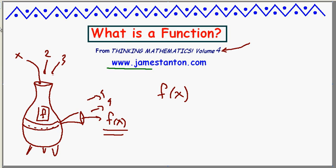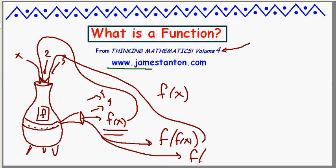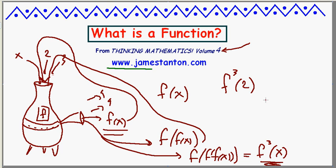The nice thing about the machine picture is that one can think of all sorts of things to do. What if I took this output and put it back into the machine? Then out would come f applied to f(x). Or I could do that again and get f applied to f applied to f(x). This notation is a little awkward writing f, f, f of x, so people tend to write a little 3 on it — f³(x) — meaning put the value x through the f machine three times. For the squaring function, f³(2) would be: put 2 in, get 4; put 4 in, get 16; put 16 in, get 256.